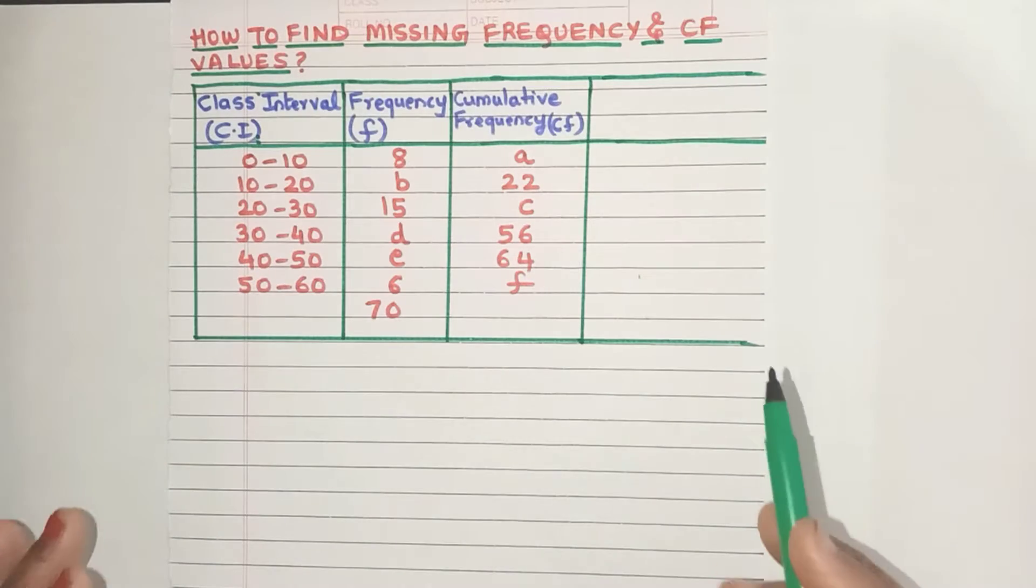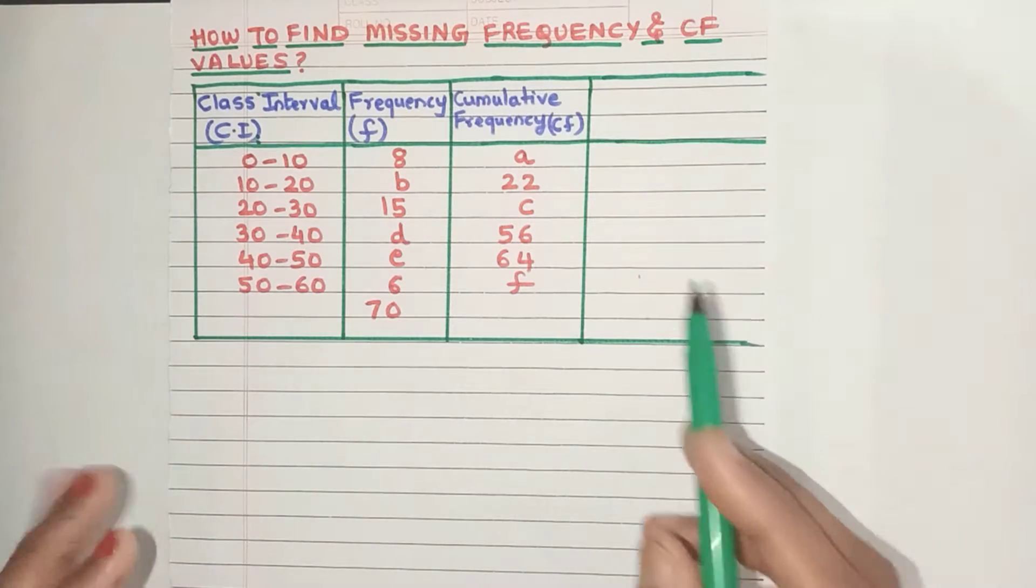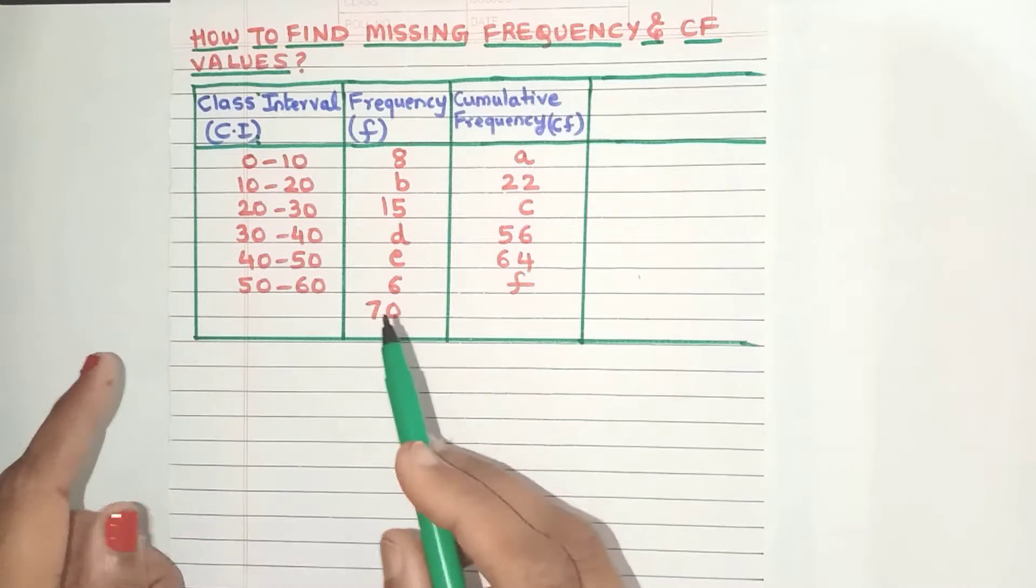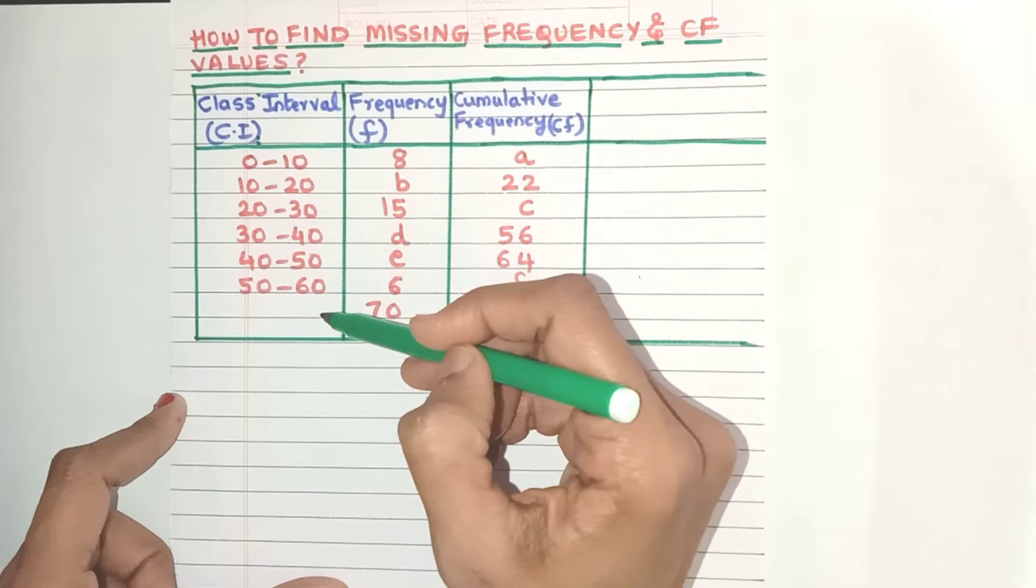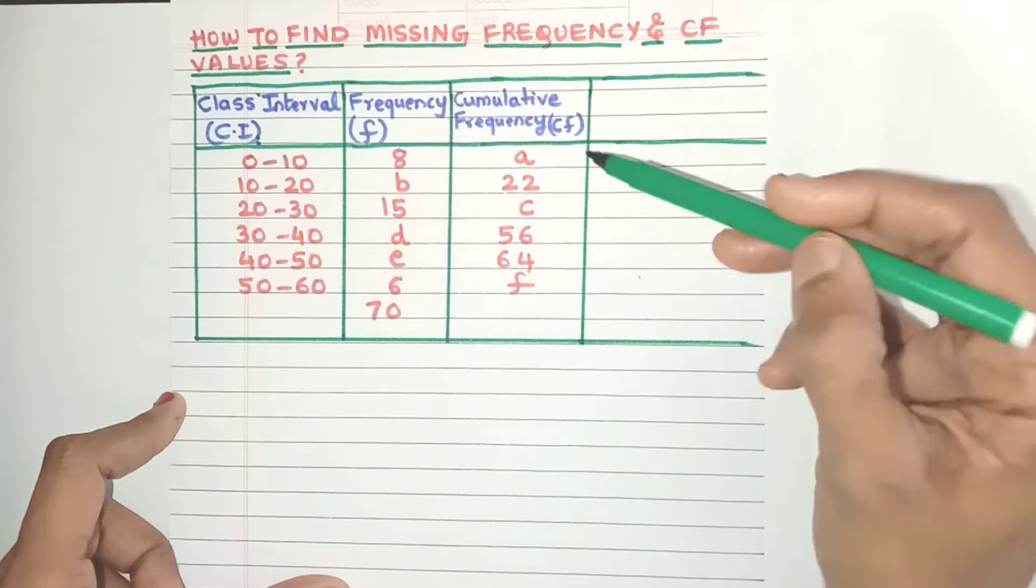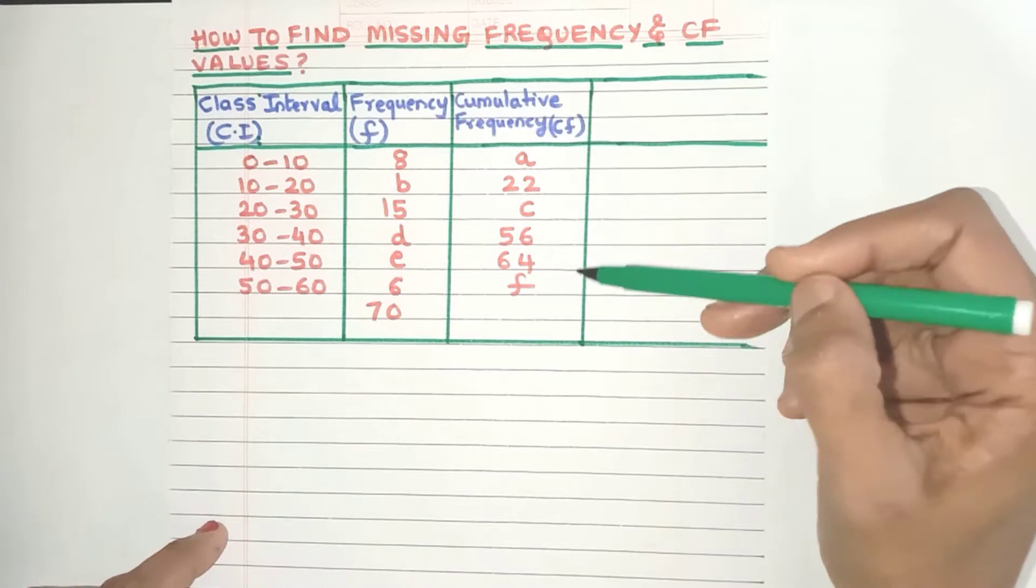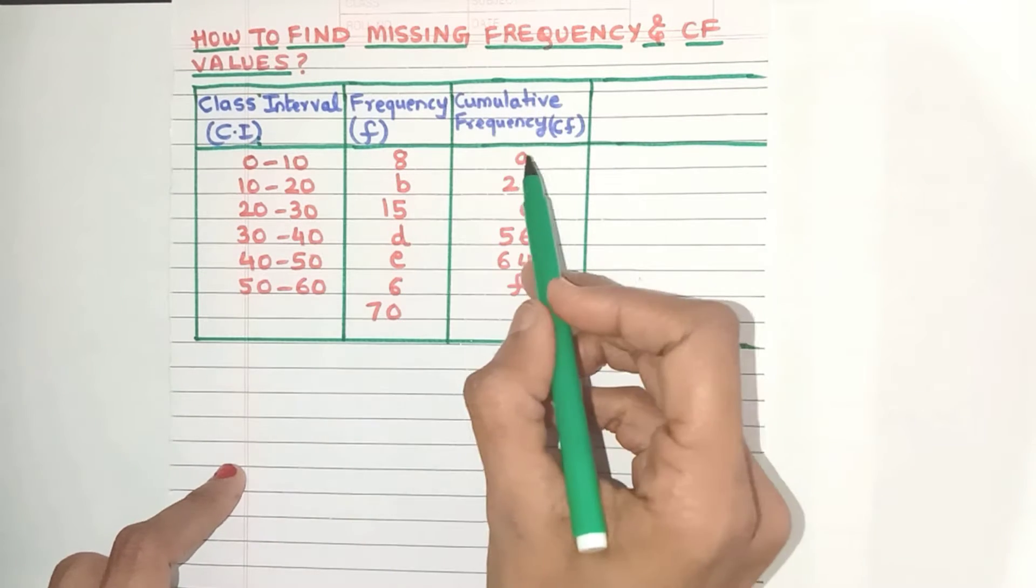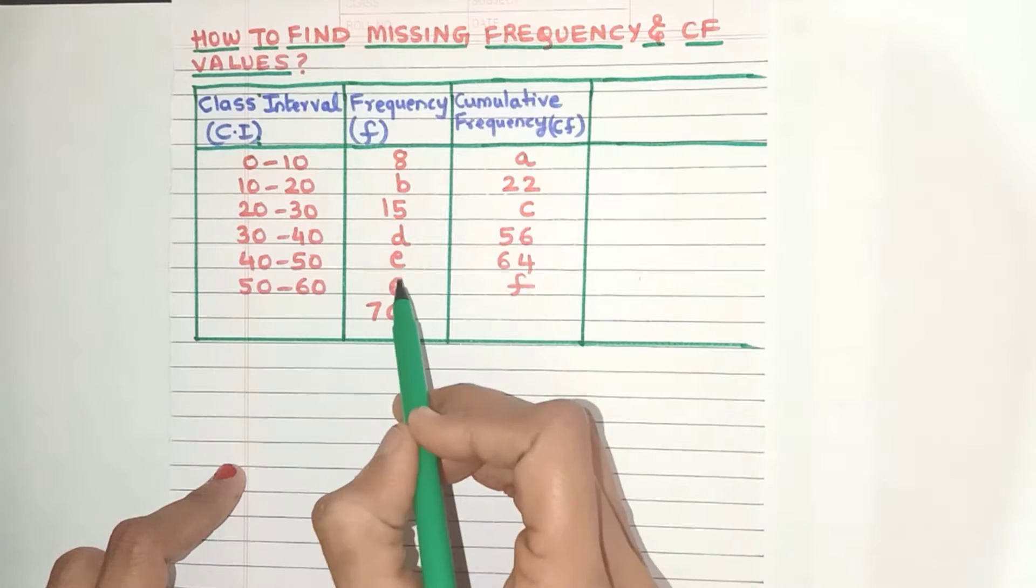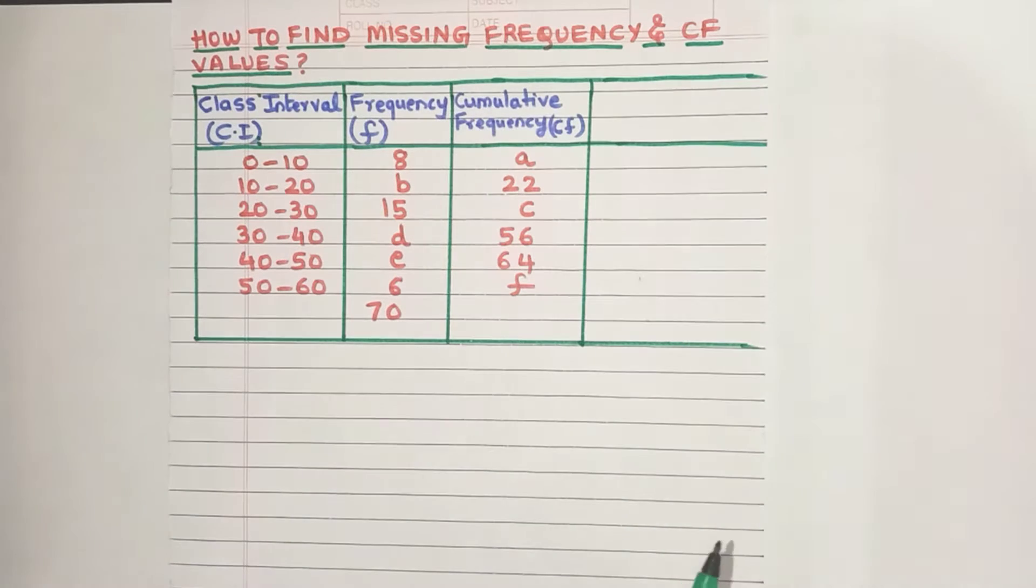Hello everyone, today let's learn how to find missing frequency and CF values from the given data. In this example we have the class interval column here, this is the frequency column, and this is the cumulative frequency or the CF column. Now we have to find these missing frequency and CF values. So let's see how to do that.